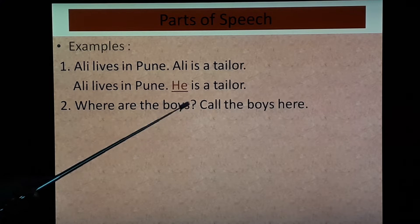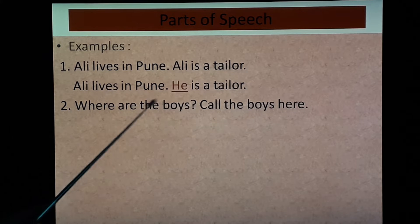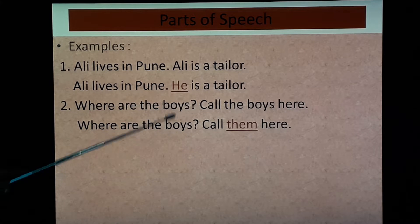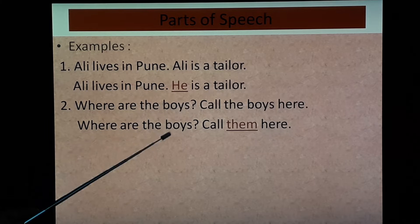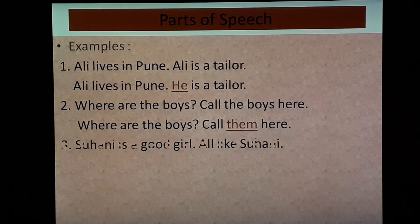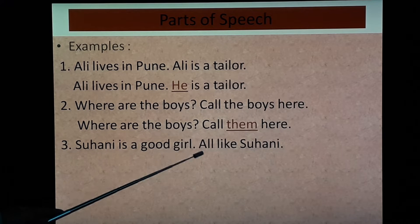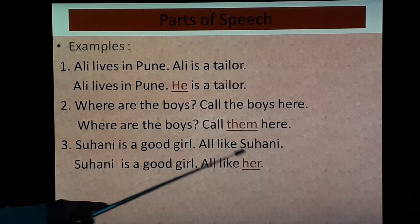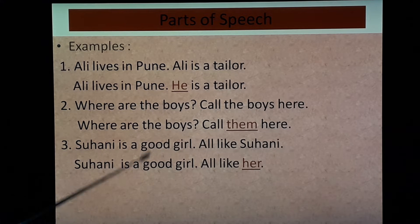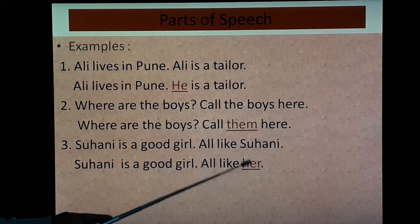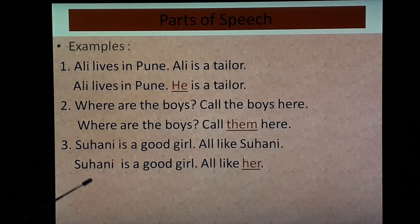Second example: 'Where are the boys? Call the boys here.' The noun 'the boys' is repeated, so we use a pronoun: 'Where are the boys? Call them here.' Third example: 'Suhani is a good girl. All like Suhani.' Becomes: 'Suhani is a good girl. All like her.' — we use 'her' because Suhani is a girl. Fourth: 'Where is the map? Bring the map here.' Becomes: 'Where is the map? Bring it here.' — 'it' is used because the map is a non-living thing.